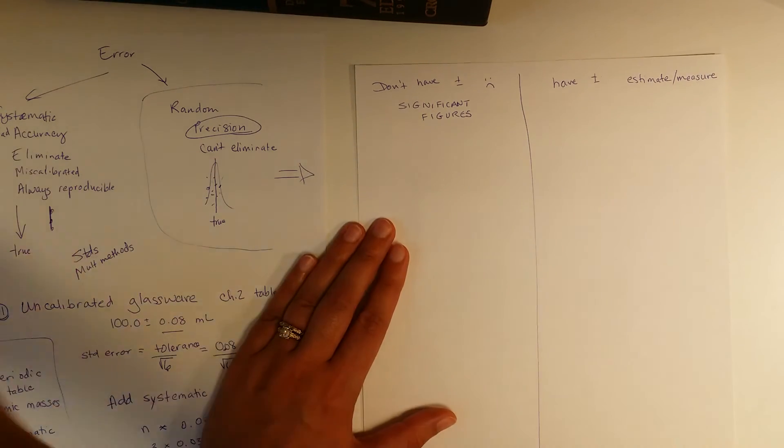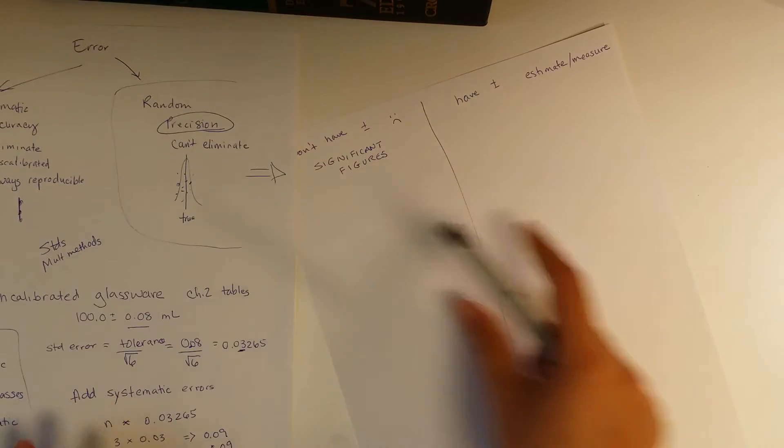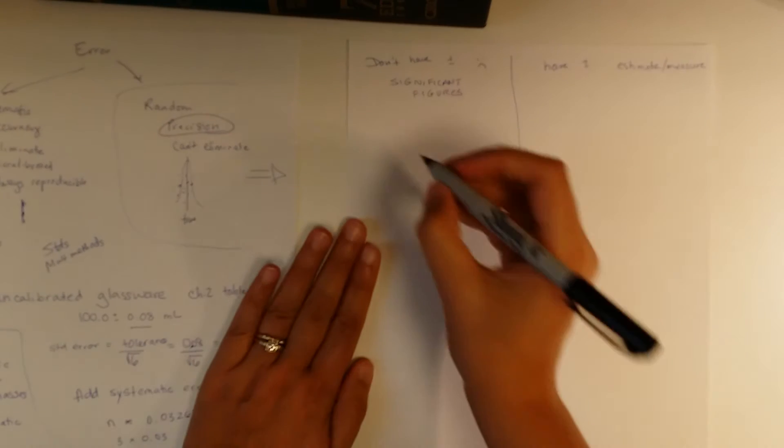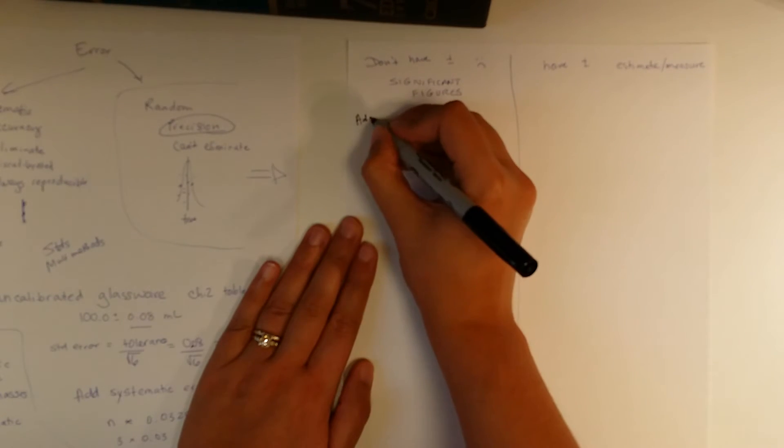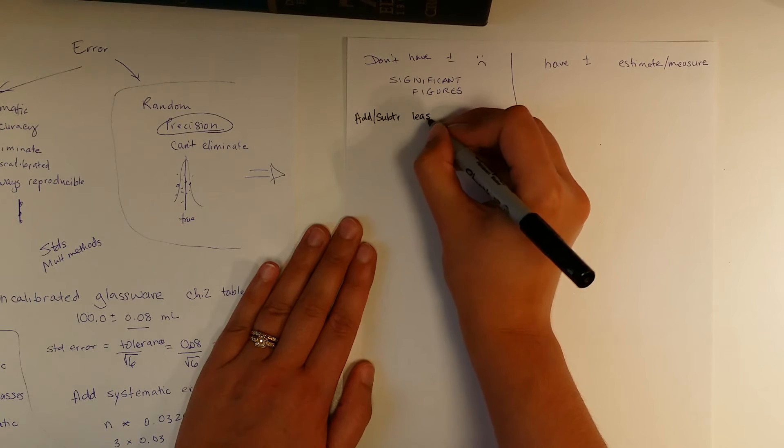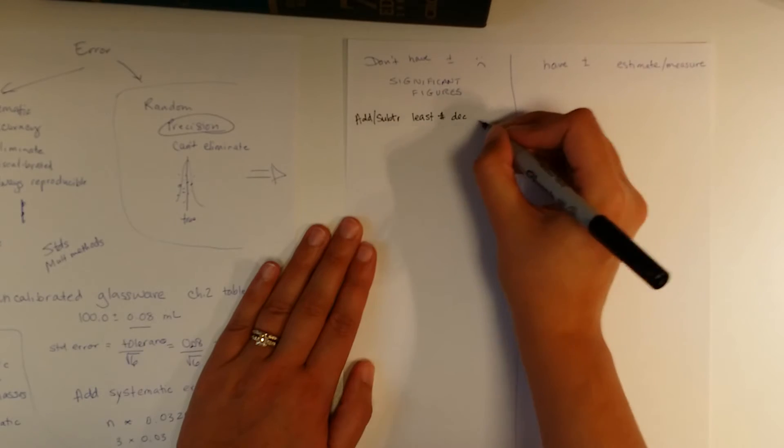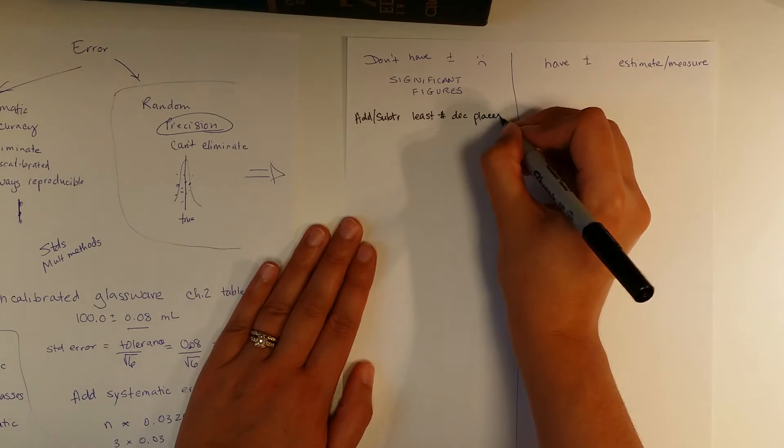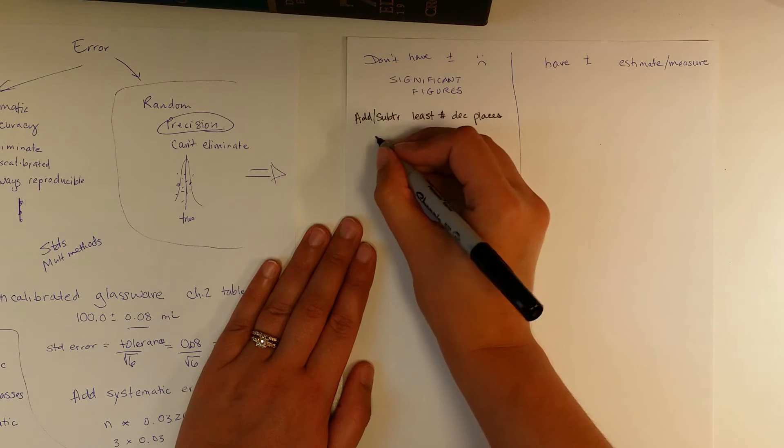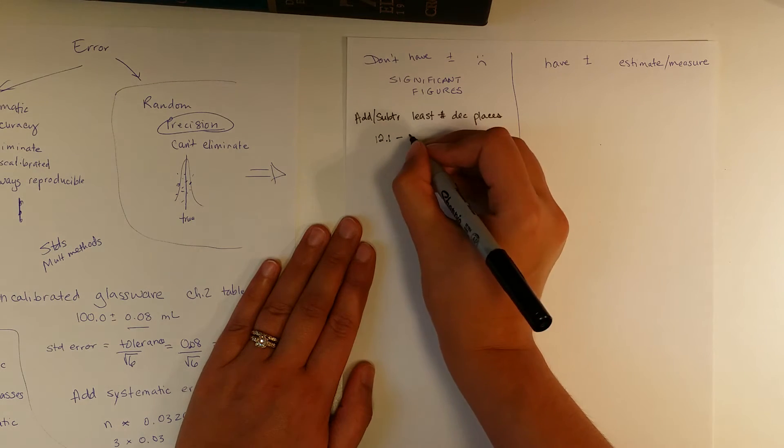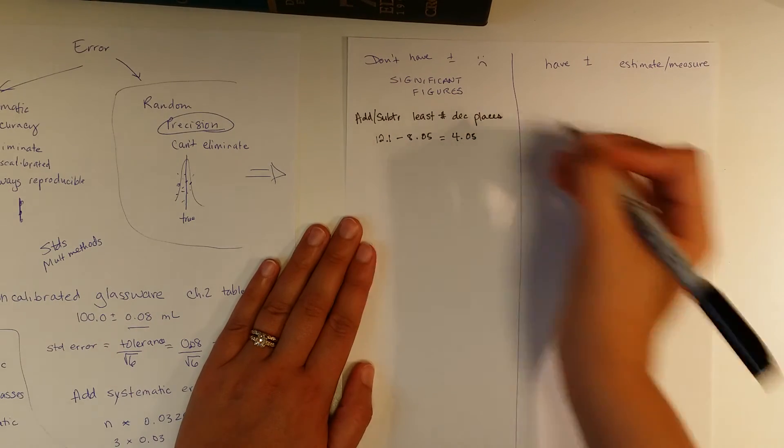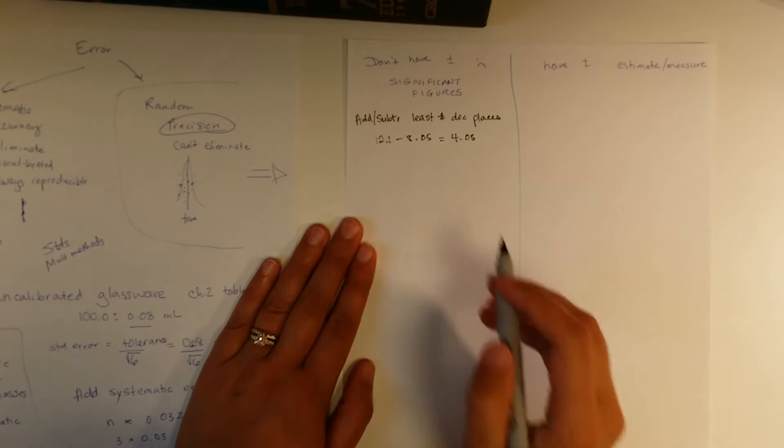The simplest thing is going to be add and subtract, and I'm going to unstick my hand from some of these pages and start to color code things for you guys. So add subtract rule for significant figures is least number of decimal places. You're probably thinking, oh my god, I can't believe that she's actually doing this. So example, 12.1 minus 8.05.